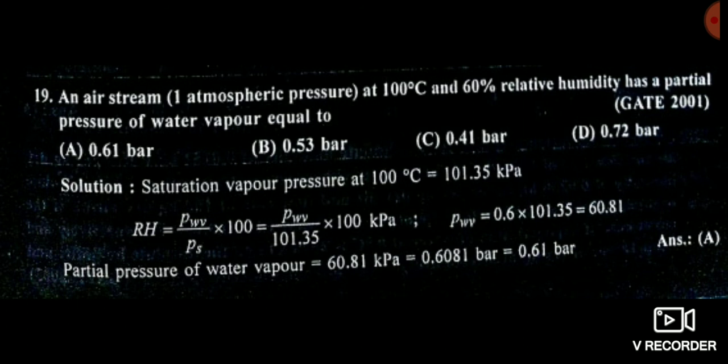After calculating Pv = 60.8 kPa, we convert to bar by dividing by 10⁵ Pa, giving 0.61 bar. So relative humidity is simply the ratio of the partial pressure of water vapor to its value at full saturation. In this case, since the air stream is at one atmospheric pressure when fully saturated, the saturated partial pressure is one atmosphere = 101.35 kPa.